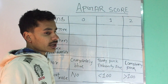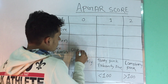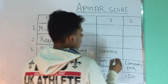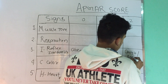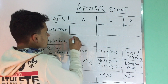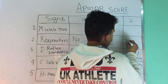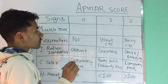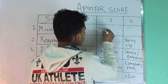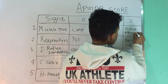If the newborn is completely pink — body and extremities both — score two. For Reflex Irritability: if absent, score zero; if there is grimace only, score one; if there is cough and sneezing, score two. For Respiration: if absent, score zero; if there is a weak cry, score one; if there is a strong cry, score two. For Muscle Tone: if limp, score zero; if some flexion, score one; if active movement, score two.